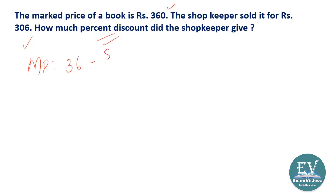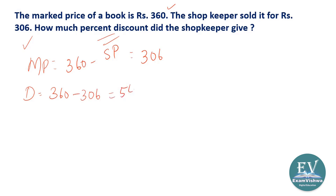The marked price is 360, the selling price is 306. So what is the discount? 360 minus 306 equals 54 rupees discount. That is the discount amount. Now if you are asked the discount percentage, that is a percentage.